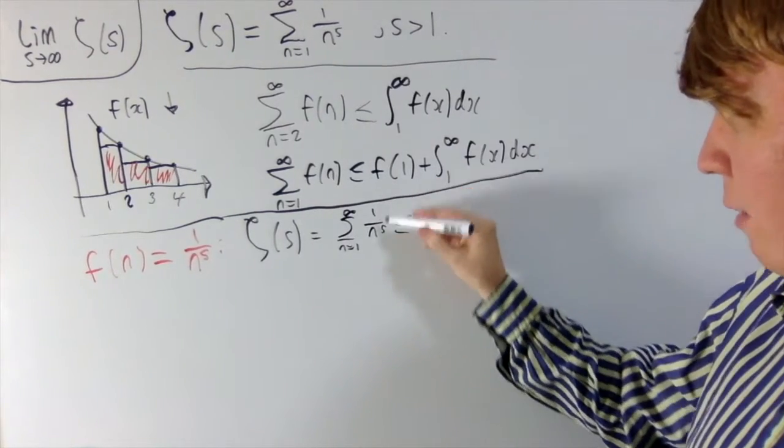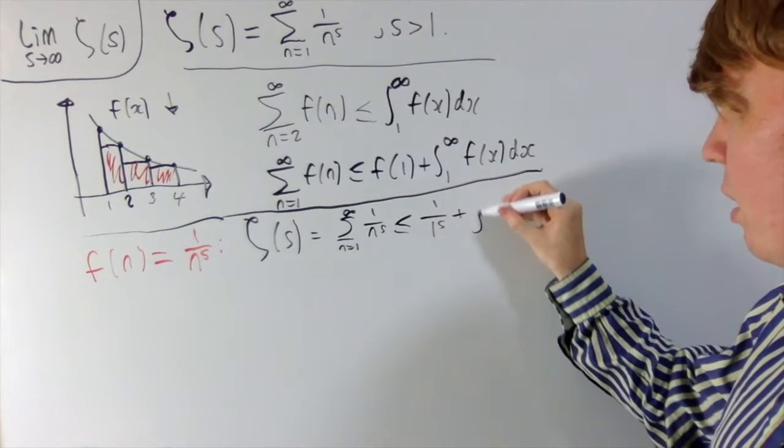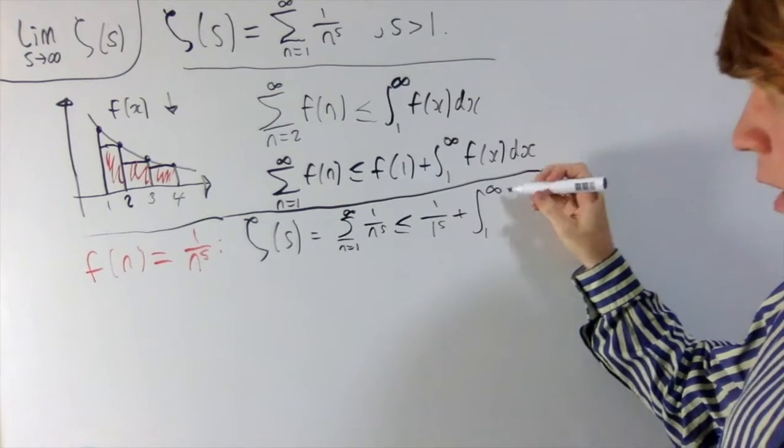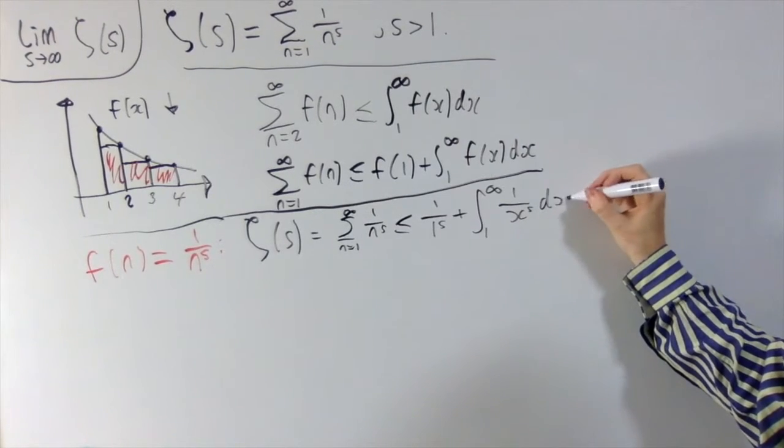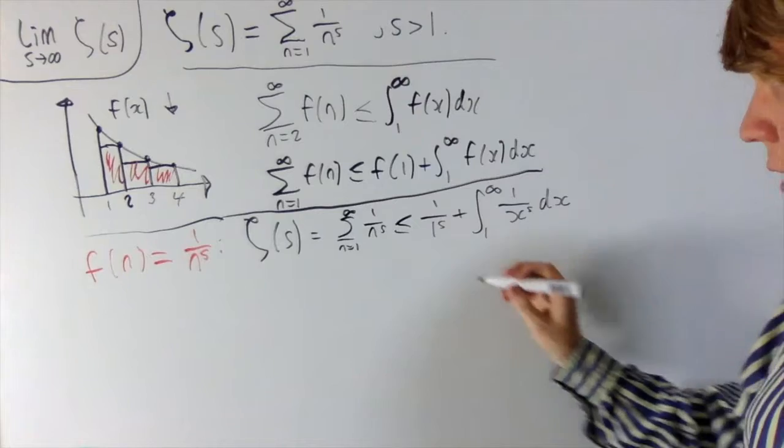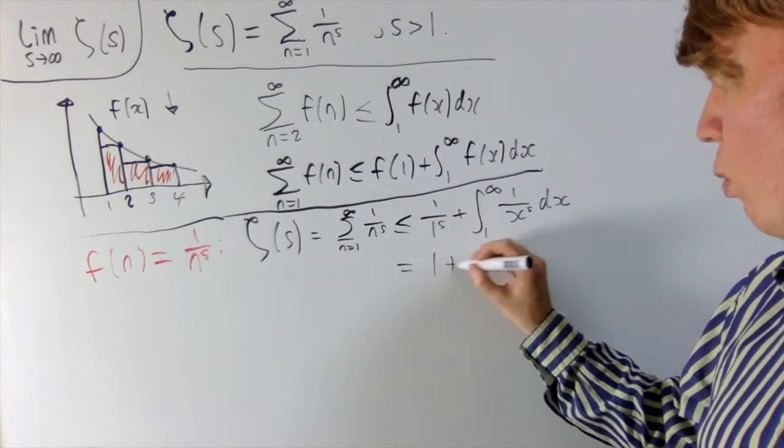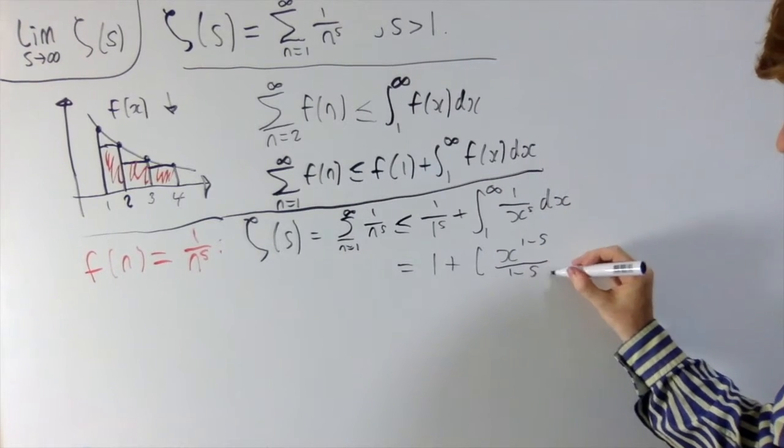So this has to be less than or equal to f of 1, so 1 over 1 to the s, so that's just equal to 1, plus this integral from 1 to infinity, 1 over x to the s, integrating with respect to x here. So this is nice, because we can evaluate this integral really easily. So this is equal to 1 plus, and you'll get x to the power of 1 minus s over 1 minus s.